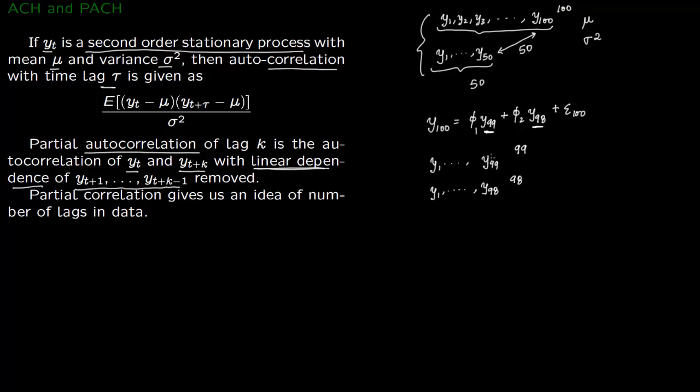But if you want to find partial autocorrelation, you remove these effects. You remove Y100's dependence upon Y99 and Y98. You remove the linear dependence and then take the partial autocorrelation. Partial correlation gives us an idea of the number of lags in the data, because if there's dependence upon past data, it will remove it.